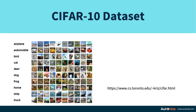In the dataset, there are 10 different classes, namely aeroplane, automobile, bird, cat, deer, dog, frog, horse, ship, and truck. The image sizes in this dataset are 32x32, and similar to MNIST, there are 60,000 training images and 10,000 testing images.